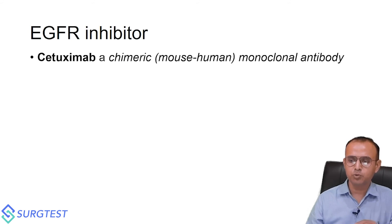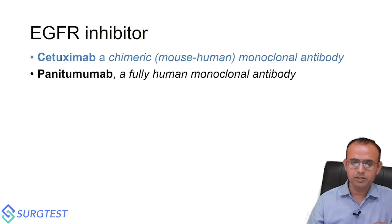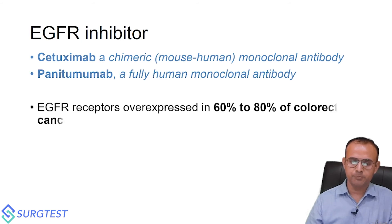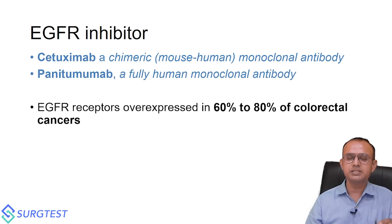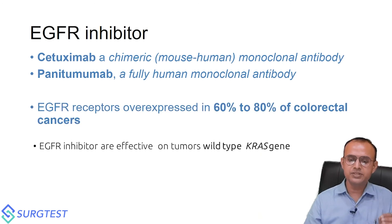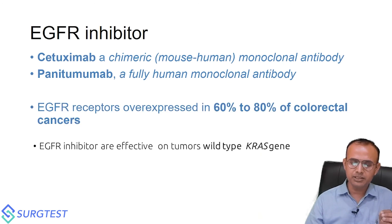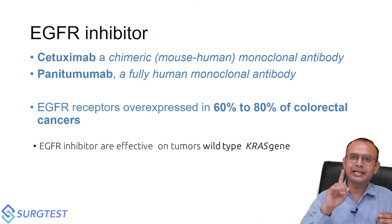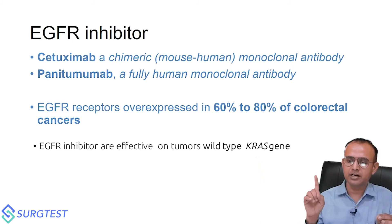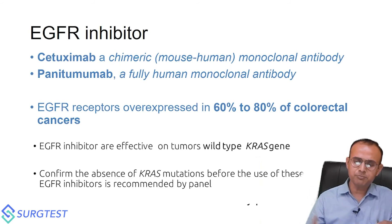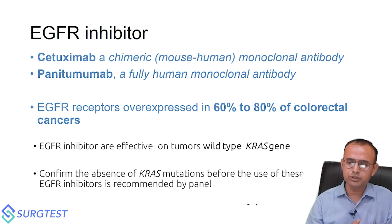Now moving to EGFR inhibitors and VEGF inhibitors: cetuximab is a chimeric mouse-human monoclonal antibody, and panitumumab is a fully human monoclonal antibody. EGFR receptors are overexpressed in 60 to 80 percent of colorectal cancers. EGFR inhibitors are effective only in wild-type KRAS genes. It is recommended to confirm the absence of a KRAS mutation before using EGFR inhibitors.